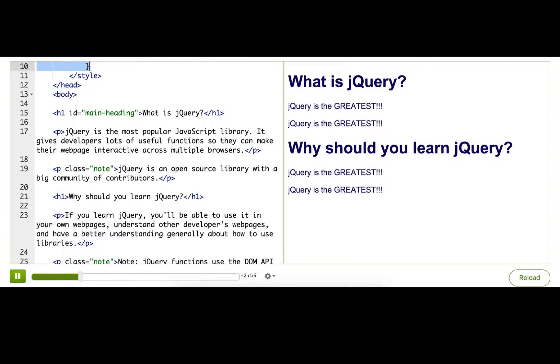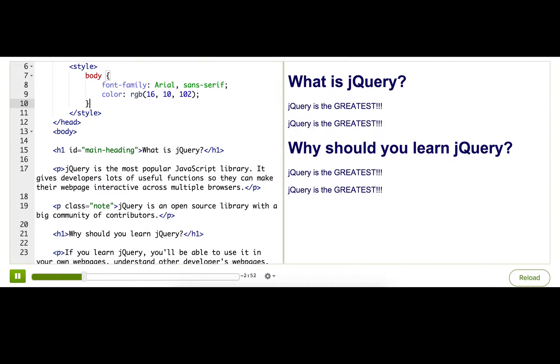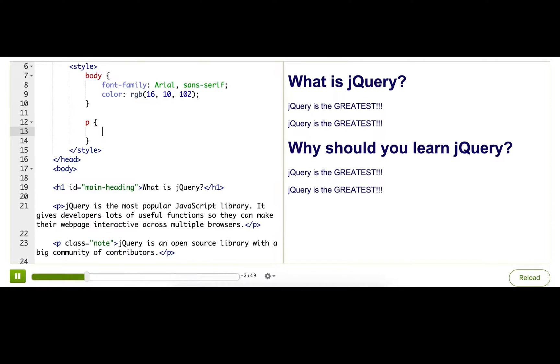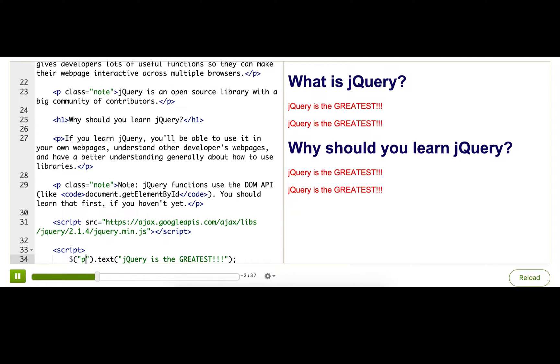So we already have this CSS rule for changing the body font and color. Now if I want all the paragraphs to be red, I'd use this rule, p color red. So p is a selector that selects all the paragraphs on the page. So down in the JavaScript, p is the string that I pass into the jQuery function.